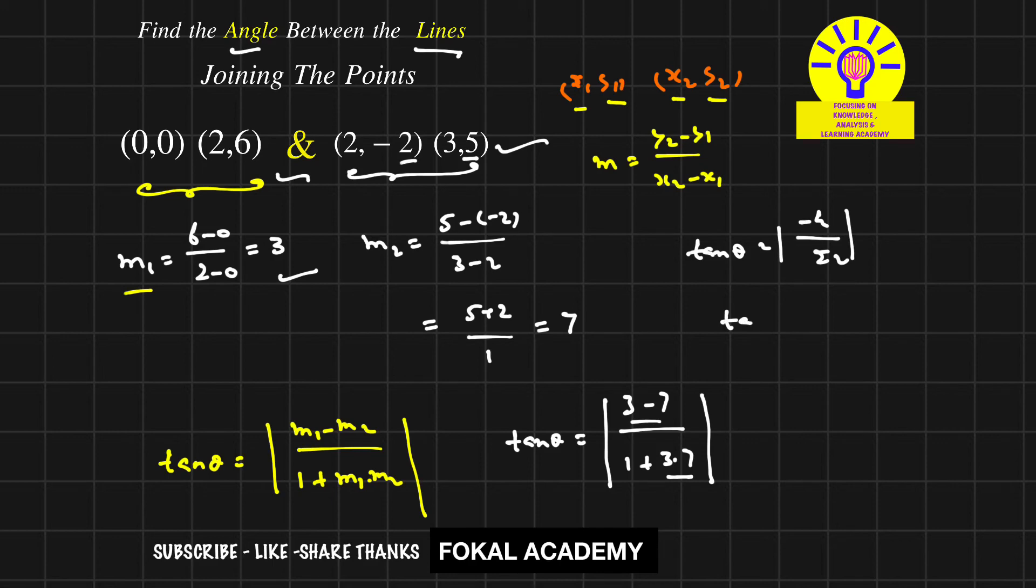That equals tan θ = 4/22 = 2/11. The modulus makes the negative become positive. So θ = tan⁻¹(2/11), and this is the angle between the given two lines.